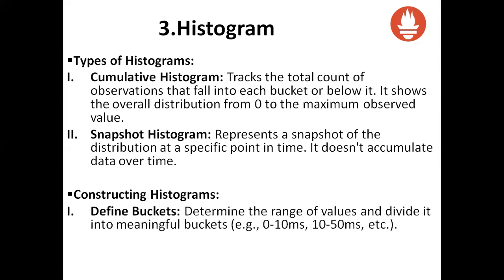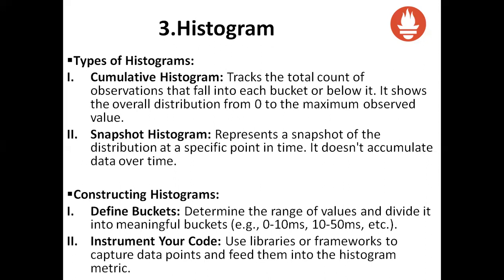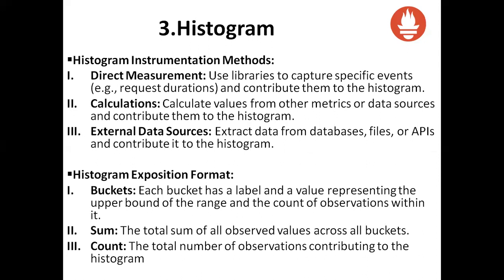Constructing a histogram: define buckets — determine the range of values and divide it into meaningful buckets, for example 0 to 10 microseconds, 10 to 50 microseconds. Instrument your code using libraries or frameworks to capture data points and feed them into the histogram metric. Instrumentation methods: direct measurement uses libraries to capture specific events like request duration. Calculation derives values from other metrics or data sources. External data sources extract data from databases, files, or APIs. Histogram exposition format includes buckets, sum, and count. Each bucket has a label and a value representing the upper bound and the count of observations within it. The sum is the total of all observed values; count is the total number of observations.